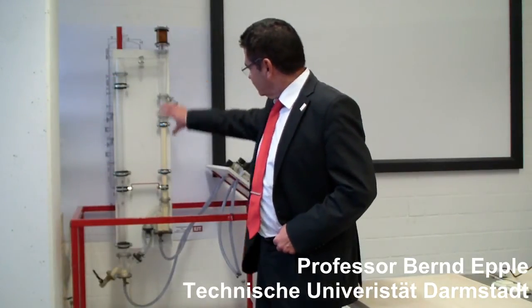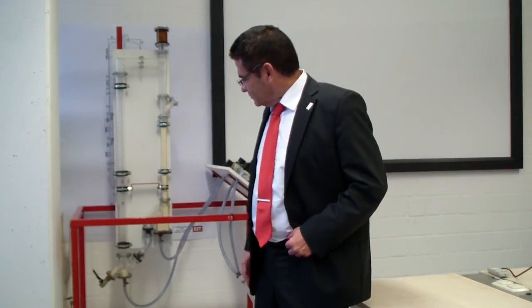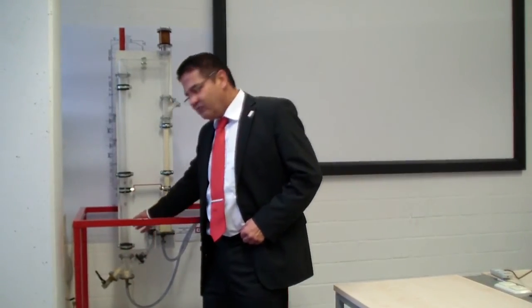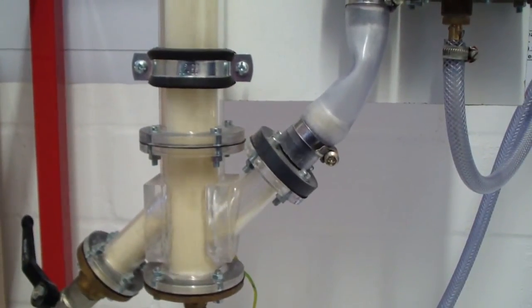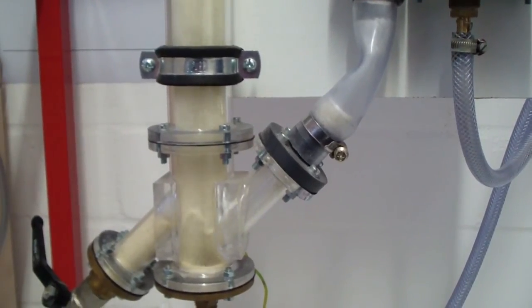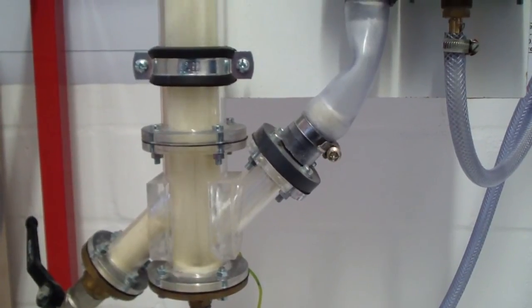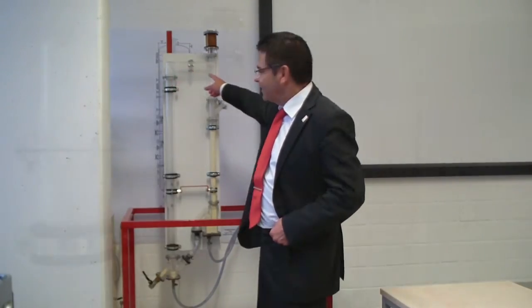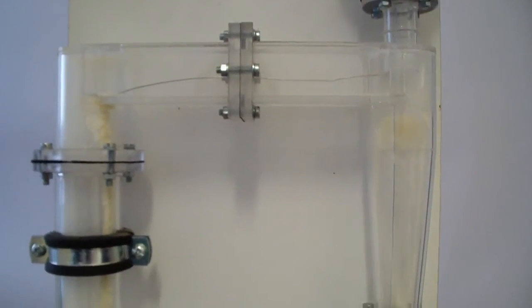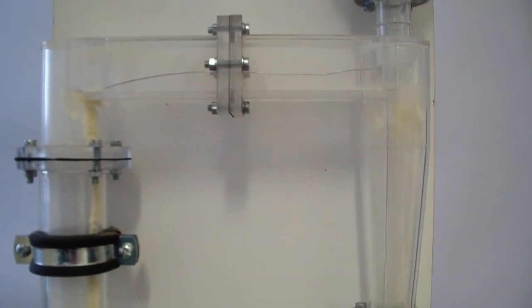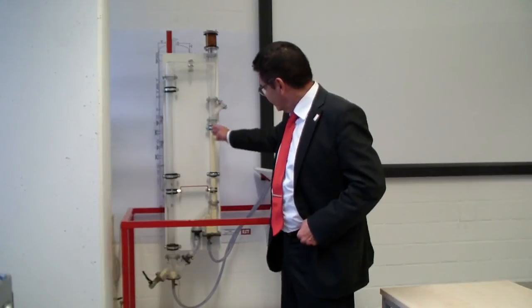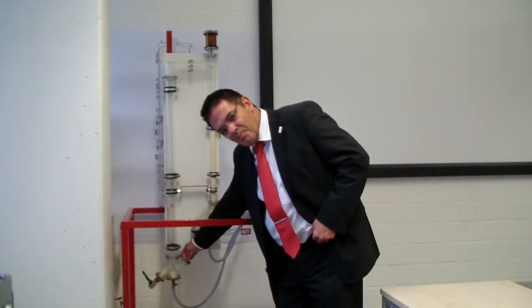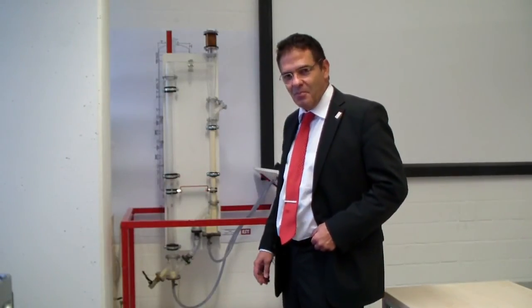This is a model setup of a CFB unit. In the carbonate looping process, flue gas enters from the bottom. The solid material is fluidized, with very intensive mixing and reaction between the flue gas and solid material, so CO2 reacts with calcium oxide forming calcium carbonate. At the outlet of the reactor, solid material is separated in a cyclone, and the decarbonized flue gas leaves at the top of the cyclone. A downcomer at the end of the cyclone — the so-called loop seal — returns the solid material back to the riser of the circulating fluidized bed system.